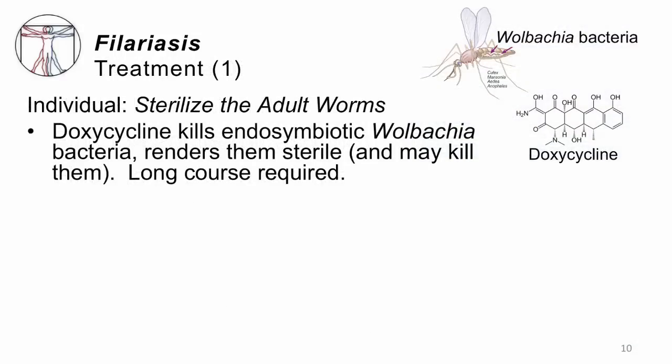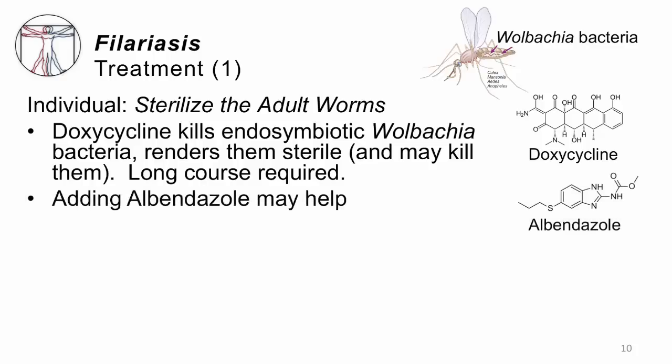How do we treat filariasis? There are two considerations. For an individual patient, we first try to sterilize the adult worms. Adult worms in the lymphatics are relatively resistant to antihelminthic treatments, but if we kill their Wolbachia — that endosymbiotic bacteria — they get very sick, become less fertile, and may eventually die. So we give doxycycline, not to kill the worm, but to kill the bugs inside the worm. This requires sometimes six weeks of treatment. We also add albendazole, which may help but doesn't seem to be the main driving factor. That works for an individual, but not for an overall population.